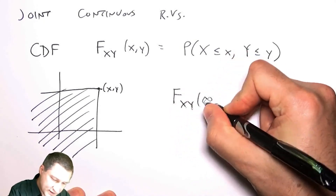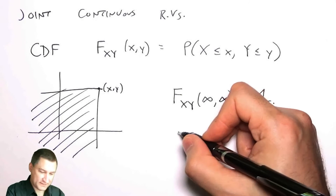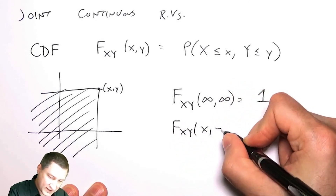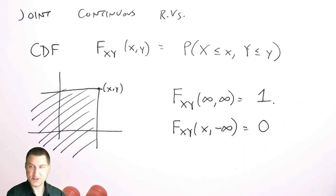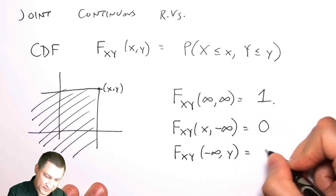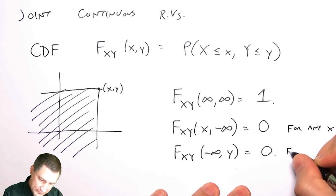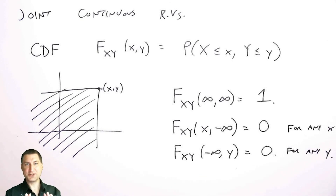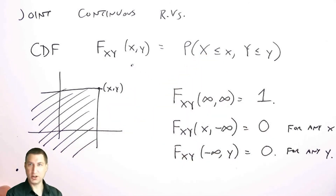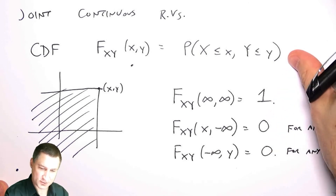There are some properties we have to have. As I go out to infinity I have gotten all the probability. If I hold x constant and go all the way to the bottom of y, I should have zero probability, and same if I fix y constant and go all the way to the bottom of x. The intuition is a function that smoothly slopes from zero up to one. In the continuous world this is a nice smooth function, unlike the stairstepped discrete case. Let me give you an example.